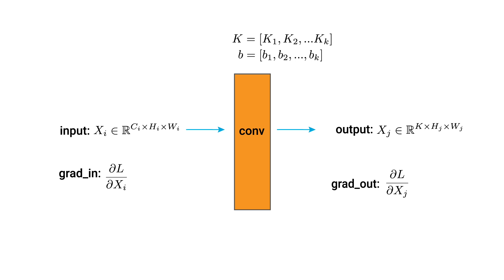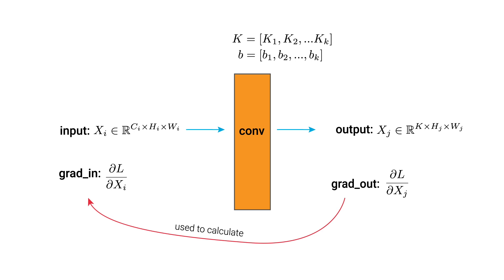During the forward pass, the layer will apply the kernels and biases to the input to produce a new set of feature maps as the output. During the backwards pass, grad_out is passed from the next layer in the network to calculate grad_in. Grad_in is then used to update the kernels and biases of the current layer. For guided backprop, we are not interested in this final step of updating the parameters — we only want to visualize the gradients flowing through the network for one input image. We make one adjustment to the standard backpropagation procedure: to only allow positive gradients to flow through RELU activation layers. We call this process RELU masking.